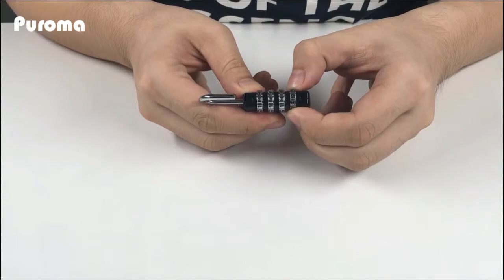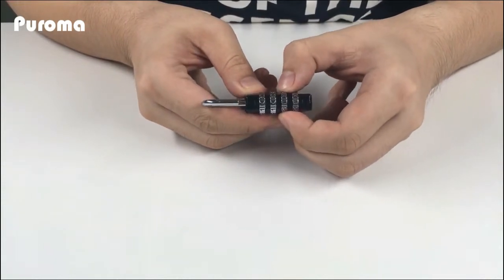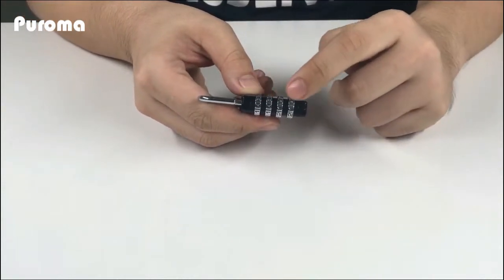Screw the number wheel to set your combination. Make sure the numbers are aligned with the X or Y.